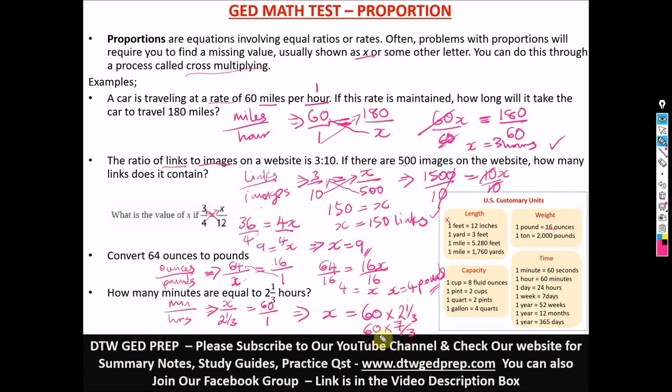So from here, we can cancel out, right? 3 will go here, 1 and 3 will go in 60. How many times? 20 times. So we have 20 times 7. That would give us what's 140. And you know, we're looking for minutes. So our answer is what's 140 minutes. How many minutes are equal to this is 140 minutes are equal to 2 one-third hours.